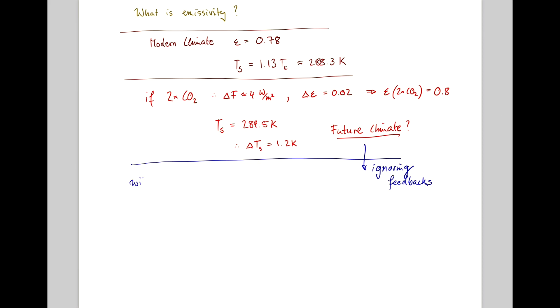With feedbacks, we are estimating that a doubling of CO2 will actually lead to a change of delta epsilon of about 0.04, which gives you a global warming of about 2.4 Kelvin. This is from just very idealized modeling considerations.